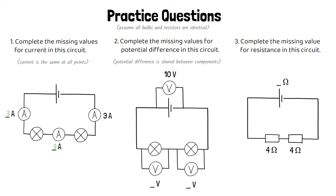Potential difference in a series circuit is shared between components. So if the cell has a potential difference of 10 volts, that'll be shared between the two bulbs, so they'll have a potential difference of five volts each.